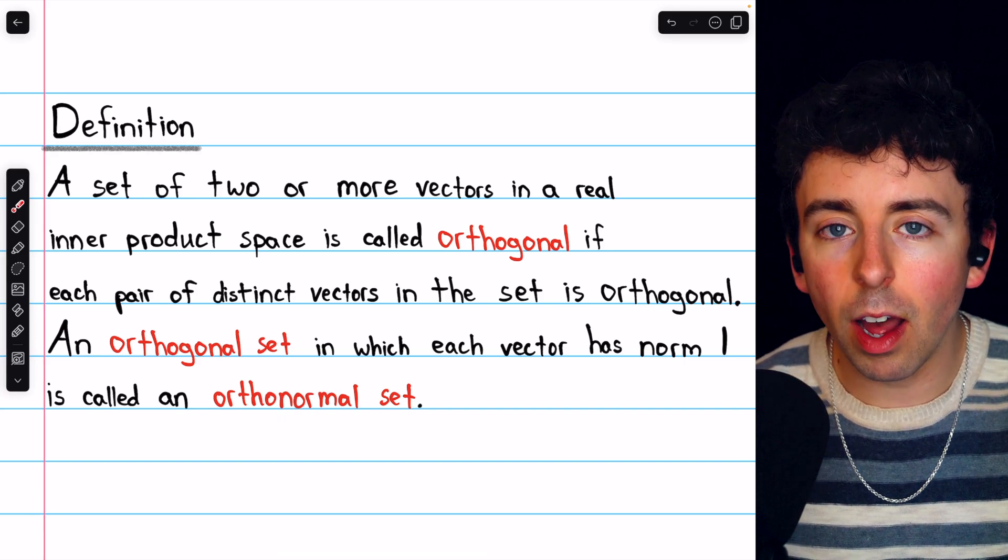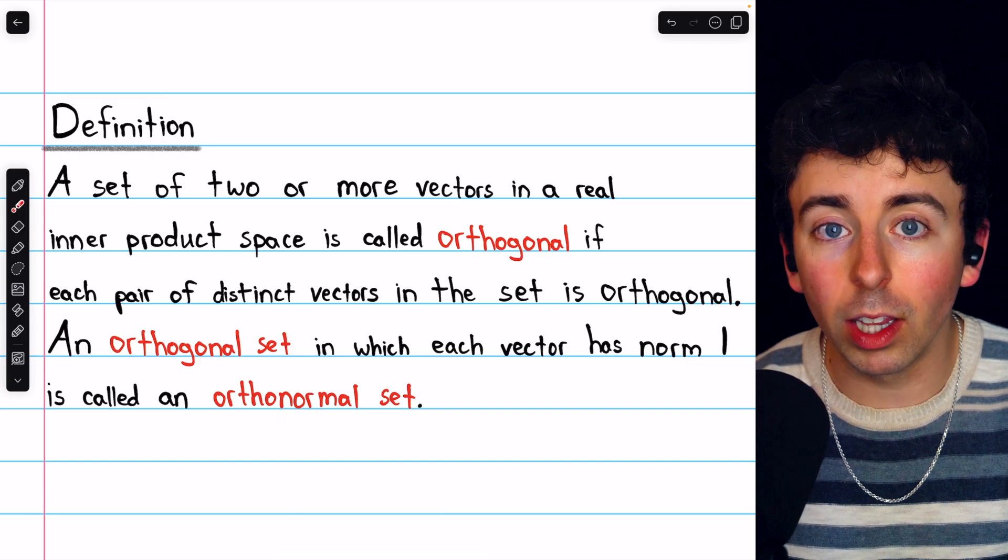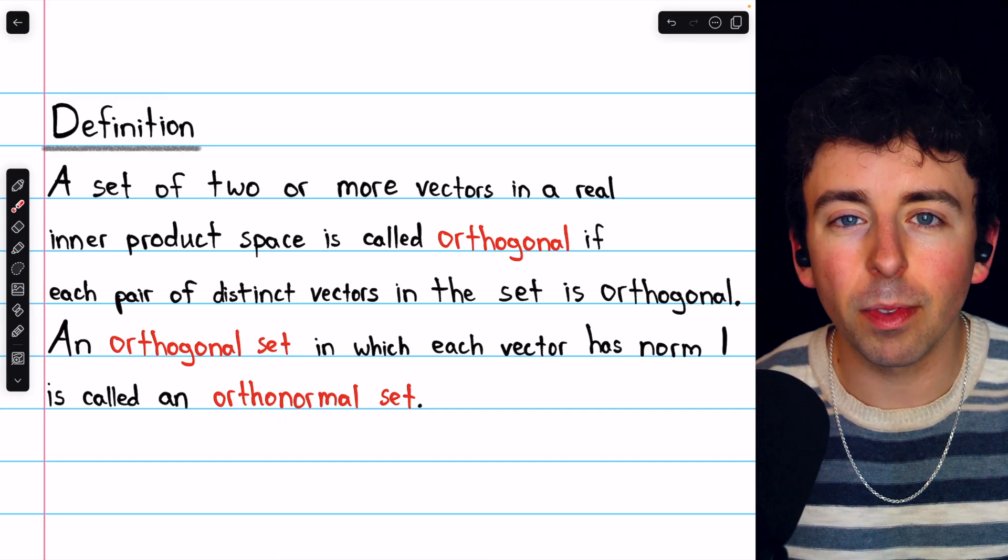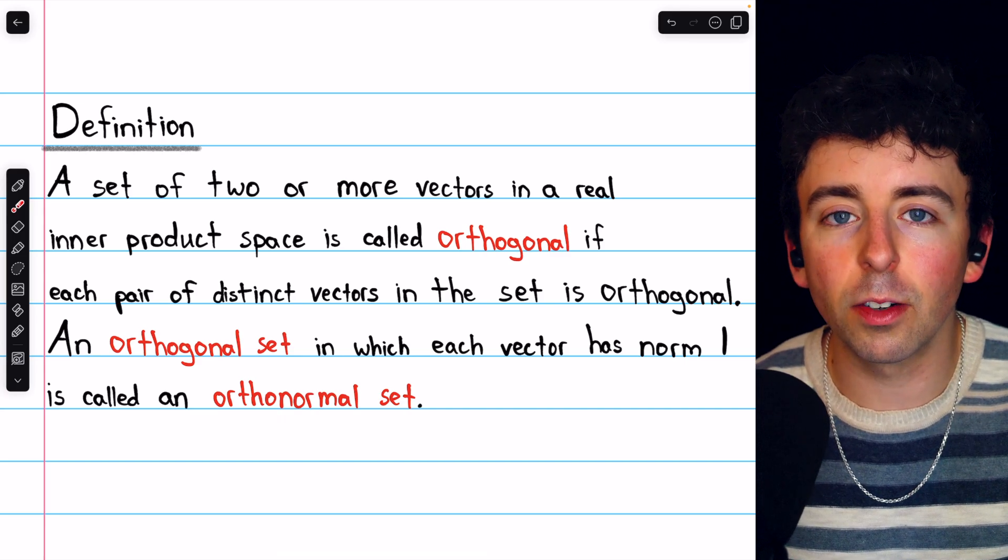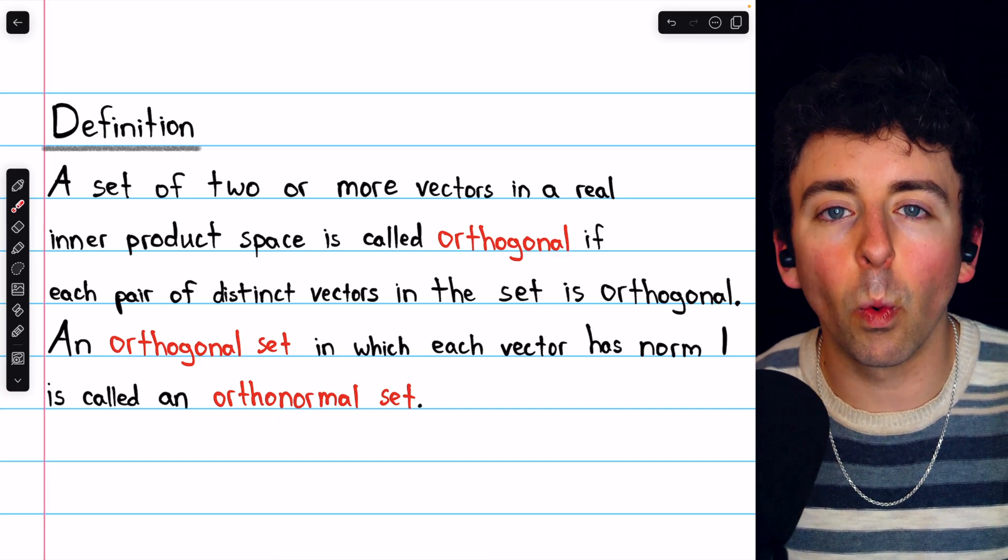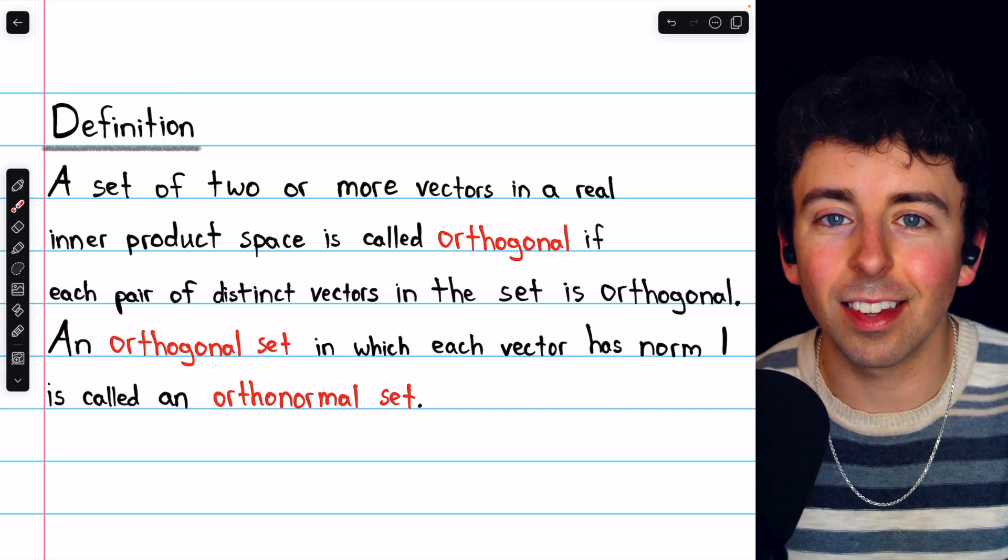With that in mind, it will often be advantageous to choose a basis where all of the vectors are orthogonal. But to talk about that, which we'll do in a later video, we first need to understand the idea of an orthogonal set and an orthonormal set. In this video, we'll see the definition and an example.